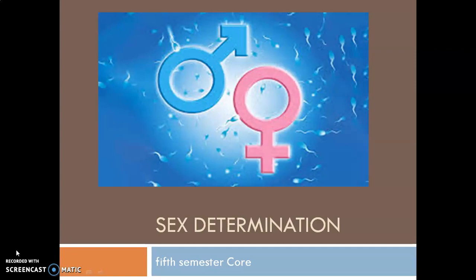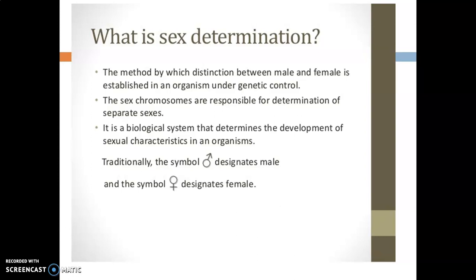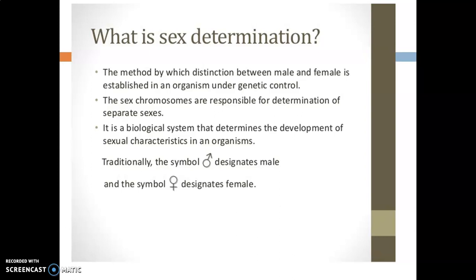How the sex of a newborn is determined was always a puzzle. Sex determination is a method by which a distinction between male and female is established in an organism under genetic control. This was later understood after the discovery of sex chromosomes, which were found to be responsible for determining the separate sexes. It is a biological system that determines the development of sexual characteristics in an organism.